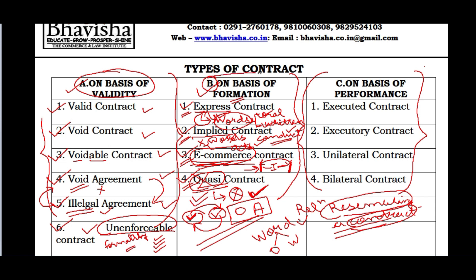So we have finished with types of contracts on the basis of formation. Now let's start the third categorization: types of contracts on the basis of performance - meaning how much has been performed, whether it's been fully done, not done, one party has pending work, or both parties have pending work. We have mentioned four parts: executed contract, executory contract, unilateral contract, and bilateral contract.